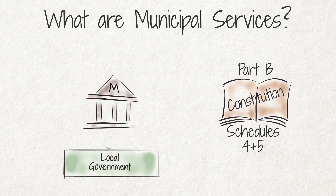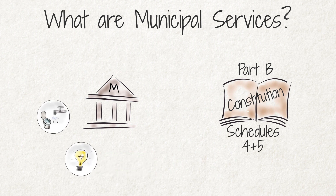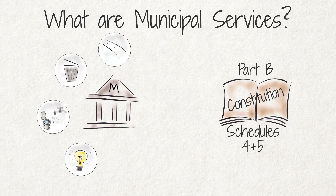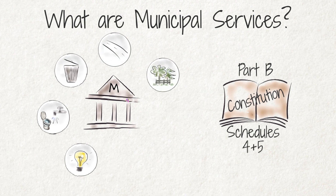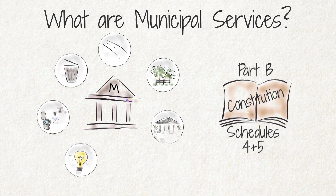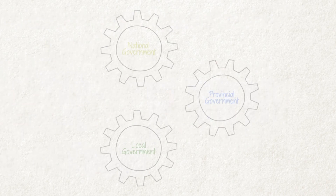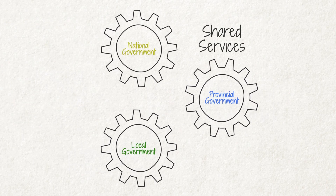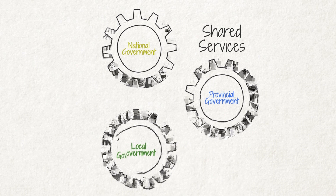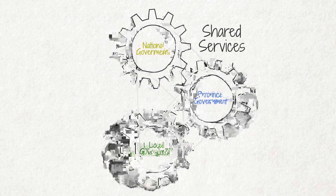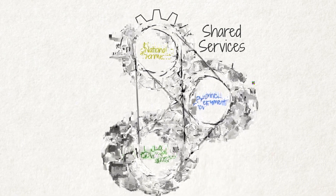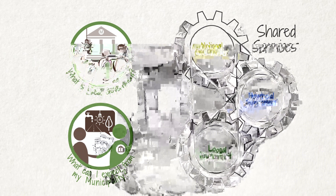These include electricity, water and sanitation services, refuse removal, municipal roads, parks and recreation, community halls and public places, and cemeteries. Some services are shared services, meaning that different spheres of government have to collaborate in providing them. This is discussed in the videos 'What is local government?' and 'What can I expect from my municipality?'